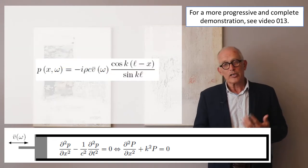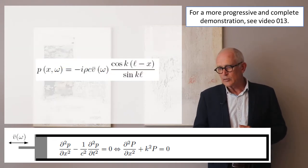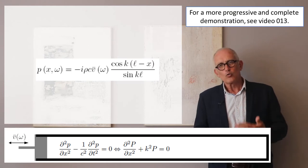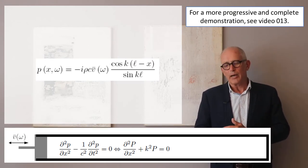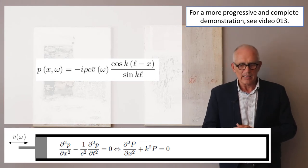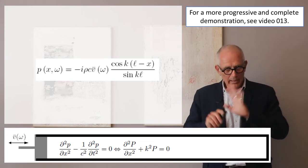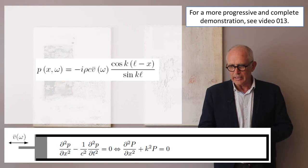If we put that back into the solution, the pressure in the tube equals minus i rho c v bar times cosine k(l minus x) divided by sine kl. We'll come back to that solution in a second.